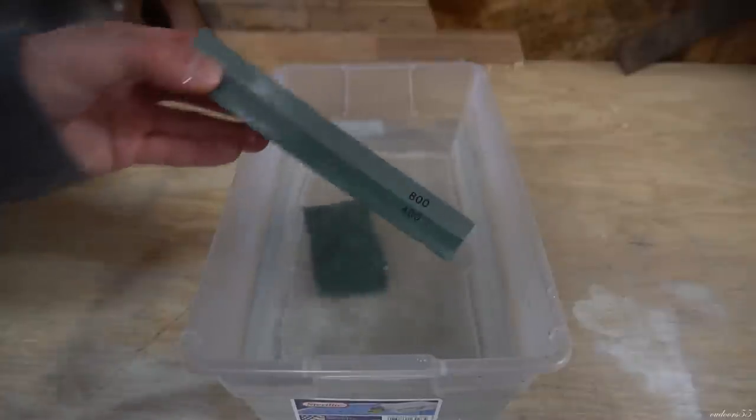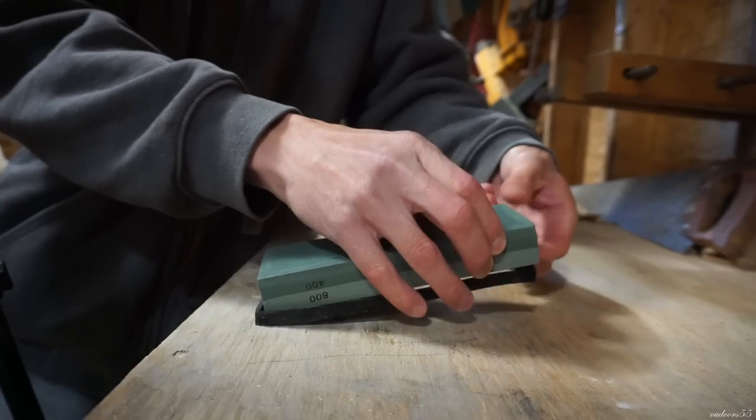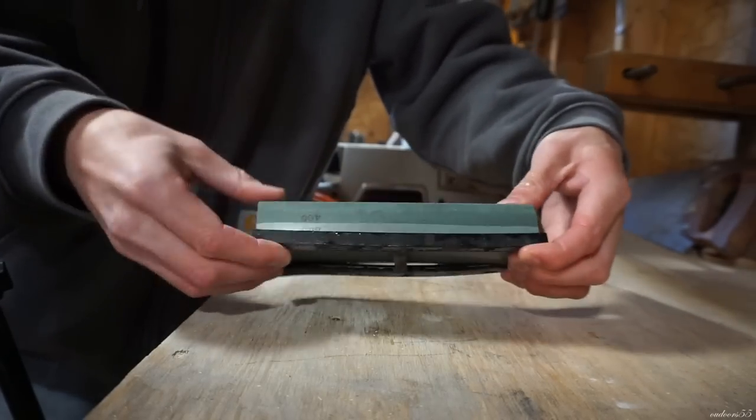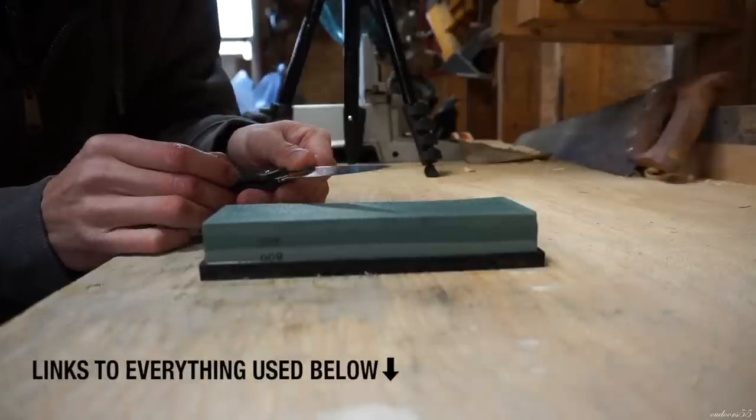Okay guys, so I'm going to be using a relatively coarse 400 and 800 grit combination stone I bought from Amazon because we're going to be doing a lot of grinding and a lot of reprofiling on this blade. Having a nice coarse stone is really essential for what we're going to be doing here.